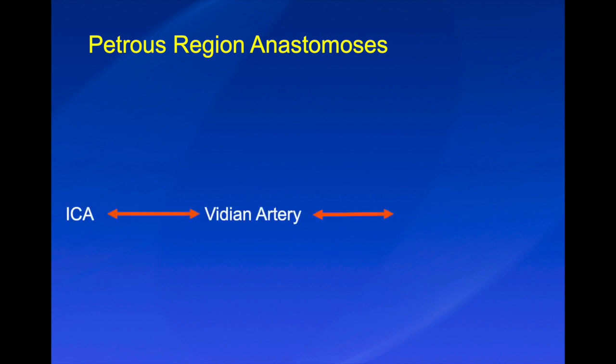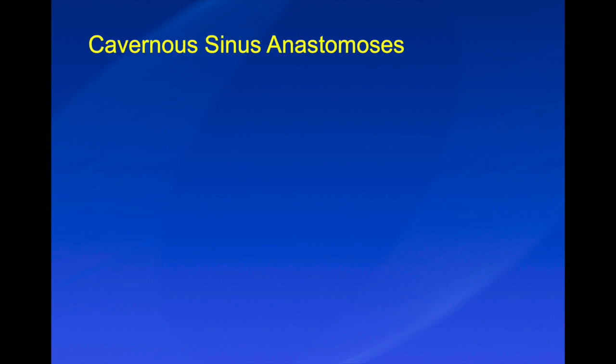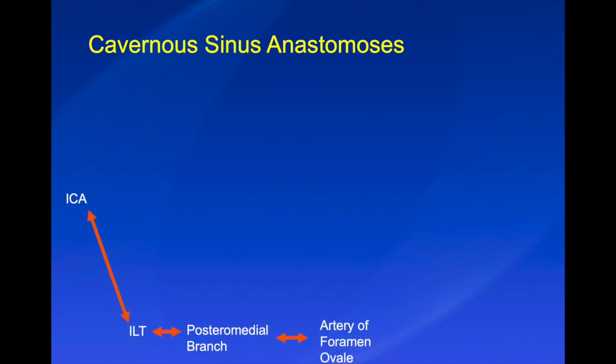The anastomotic pathways for this case are: ICA to vidian artery to distal internal maxillary artery, and ICA to ILT to posteromedial branch to artery of foramen ovale to accessory meningeal artery to the internal maxillary artery.